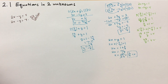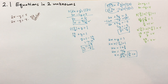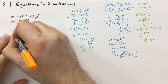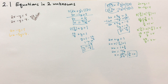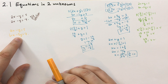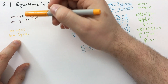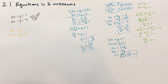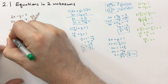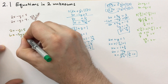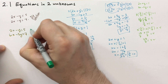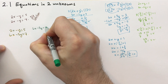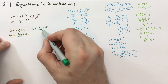Another system: 2x minus y equals 5 and 6x minus 3y equals 7. This has no solution either. If you multiply the top equation by 3 on both sides, you get 6x minus 3y equals 15. But the bottom equation says 6x minus 3y equals 7. There's no solution here. What happens when you naively subtract the equations, you'll get 0 equals minus 2, which is complete nonsense — that's how you can tell there's no solution.